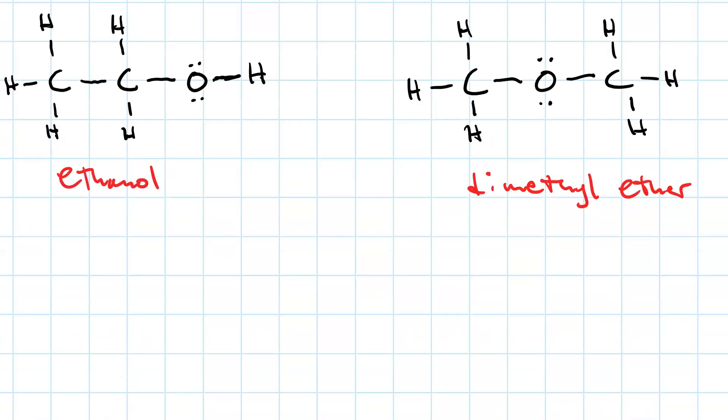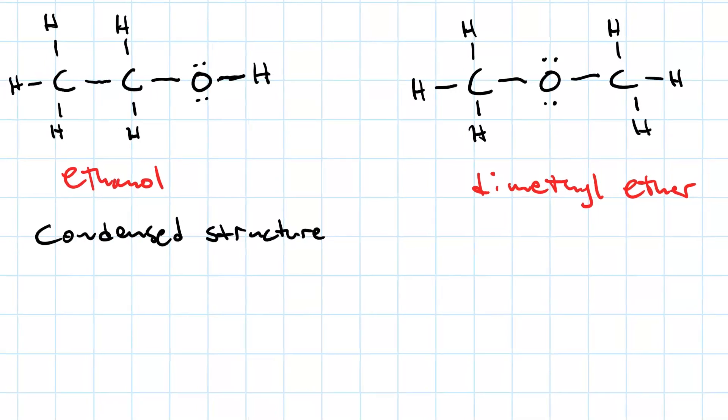Drawing out these Lewis structures quickly becomes tiresome. But there's something called a condensed structure, which is much quicker. If you look at ethanol, on the far left we have a carbon with three hydrogens. We call that a CH3.